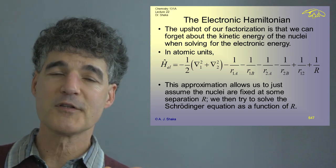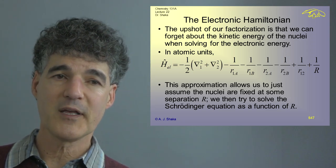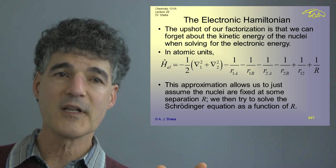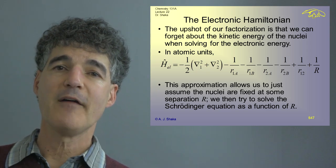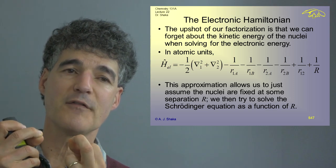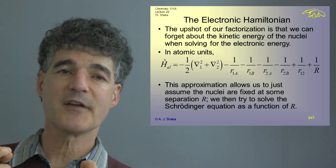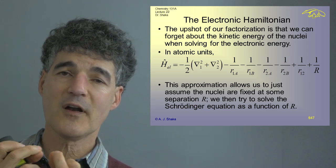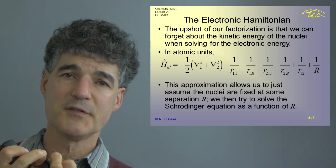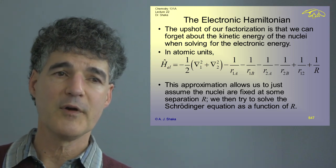Here I've written out the electronic Hamiltonian in atomic units. It still has the kinetic energy of the electrons, but the kinetic energy of the nuclei is gone. I've added 1/R, which is just the static electrostatic repulsion of the two nuclei. We have all these instantaneous terms plus this static term — we have to add it to the electronic energy because when the nuclei are very close, that will be an overall unfavorable position. We don't care about the kinetic energy of the nuclei because we threw that away.